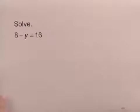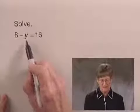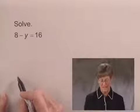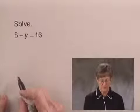We'll solve the equation 8 minus y equals 16. I have 8 minus y on the left-hand side, and I'd like to get the y term alone. I can do that by subtracting 8 on both sides of the equation.